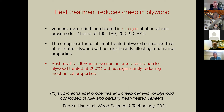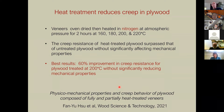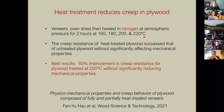Another study on plywood veneers dried and then heated in a nitrogen atmosphere at atmospheric pressure for two hours at 160, 180, 200, and 220°C found that heat-treated plywood surpassed untreated plywood in creep resistance without significantly affecting mechanical properties. The best result — a 60% improvement in creep resistance — was at 200°C in nitrogen atmosphere. This is similar to what is now widely discussed as torrification, an increasingly used industrial process that makers have been experimenting with, typically in a steam or anaerobic atmosphere.